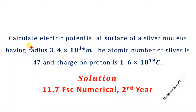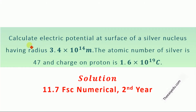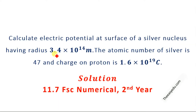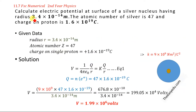Hello everyone, welcome to eGDU. Today we are going to solve this numerical, which is based on the electric potential at the surface of a silver nucleus. We will be calculating the electric potential at the surface of a silver nucleus according to the given data. The radius of the silver nucleus is given as 3.4 × 10⁻¹⁴ meters.